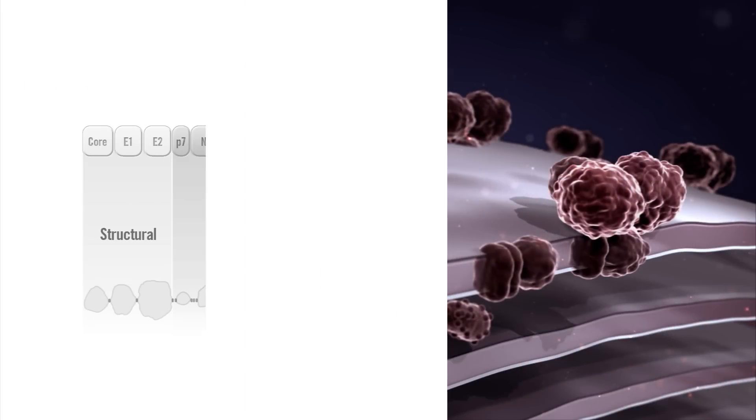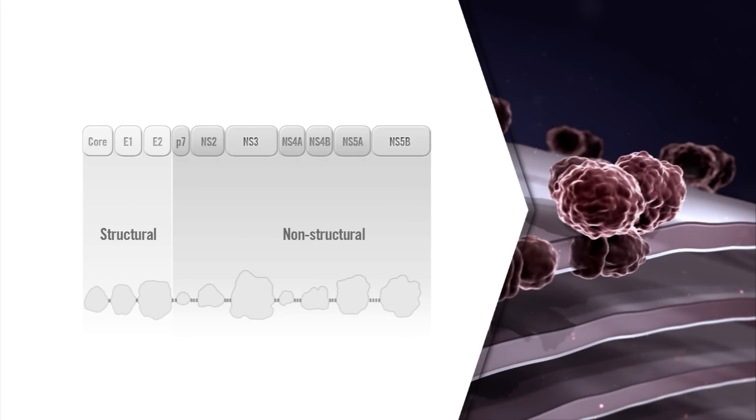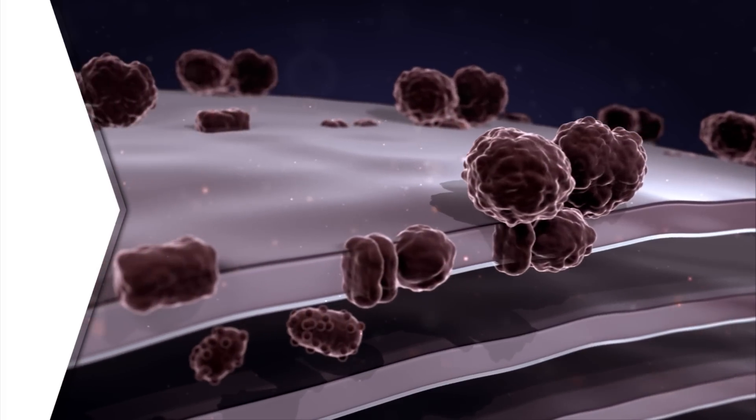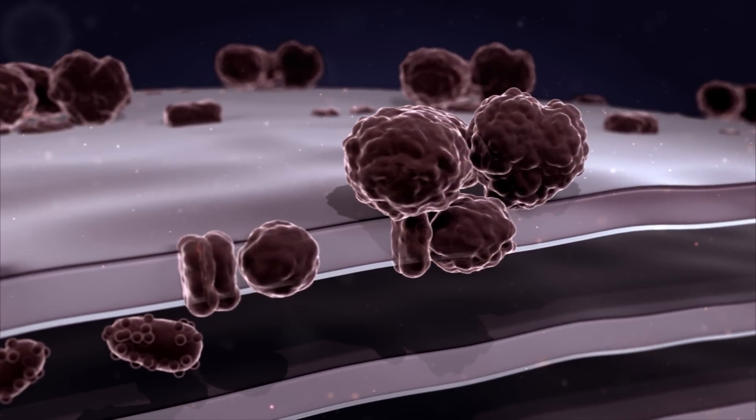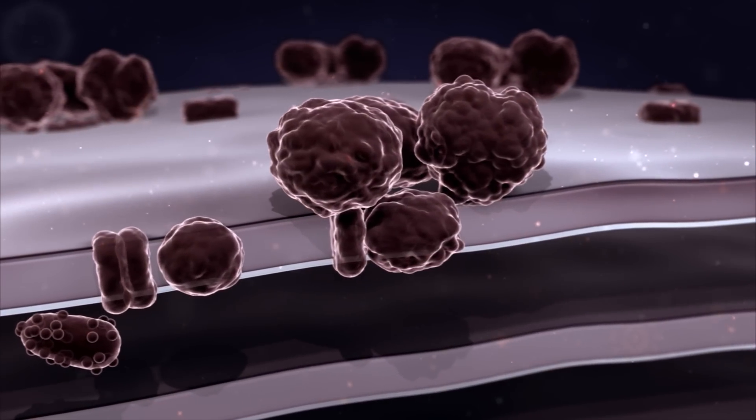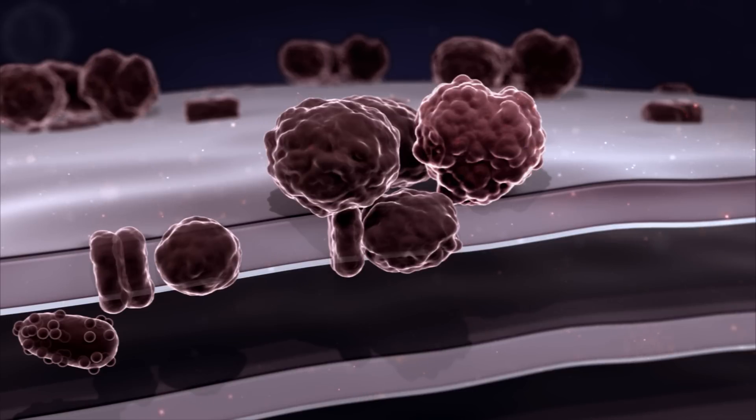The second non-structural protein that has received much attention as a potential target for pharmacologic intervention is the NS5B polymerase. The NS5B polymerase is the catalytic center of the HCV replication complex where it is directly responsible for RNA synthesis. Like other viral polymerases, NS5B has the right-hand structure with palm, finger, and thumb domains.